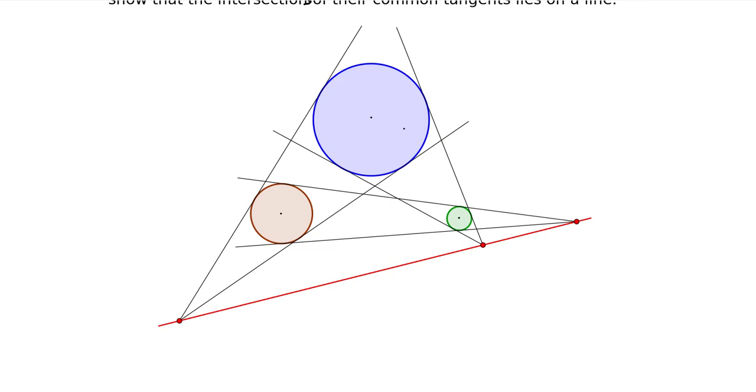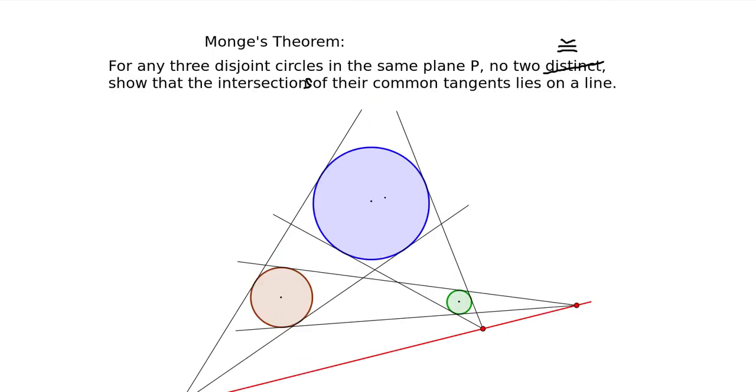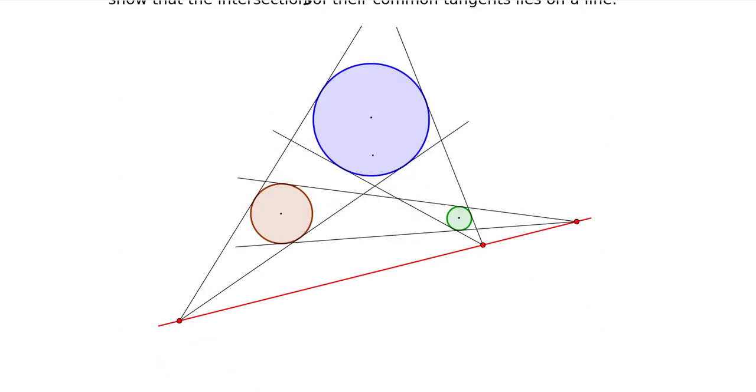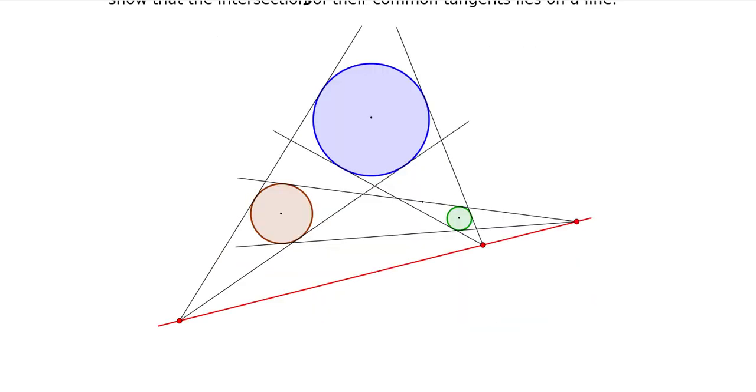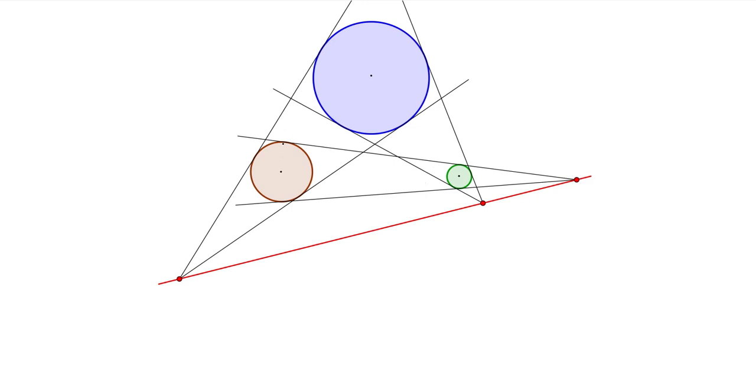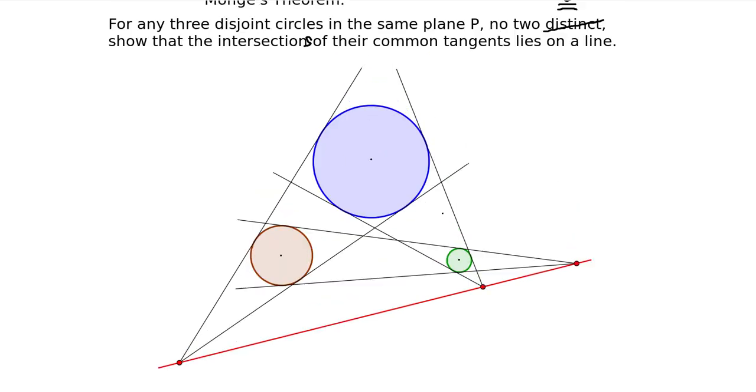And so we want to show that no matter how I were to configure these three circles, as long as no two of the circles have the same radius, that's what this was supposed to say, then this will always hold, because I could just be presenting a diagram where this just happens to happen, but we want to show that this is always true.